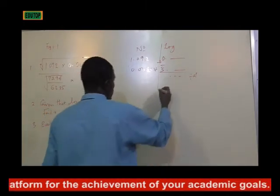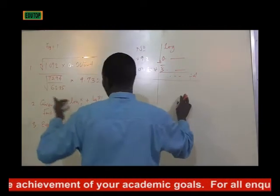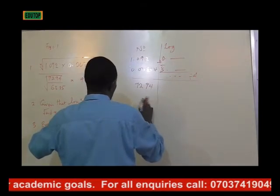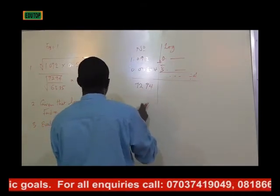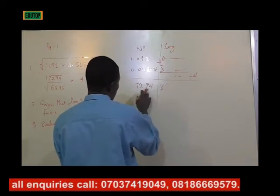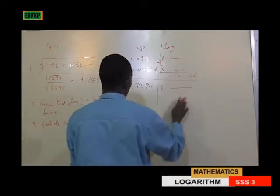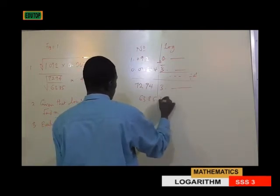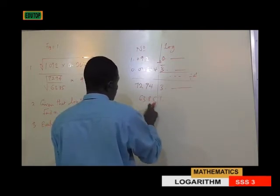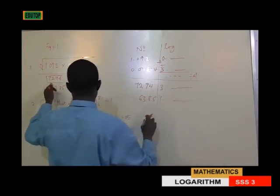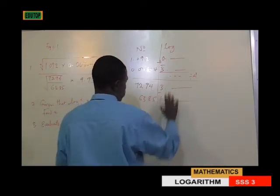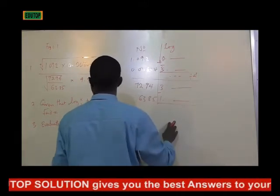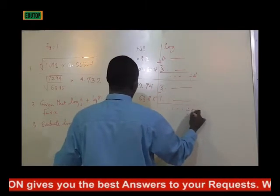Then we tackle the denominator. In the denominator we have 7294, which will be 3 points. We write our values for 7294. Then for 63.85, this one will be 1 point, giving 6308 — we write our values. Since we have a division, we are meant to subtract these two logarithm values from each other, and whatever we have as our result, we divide by 2.